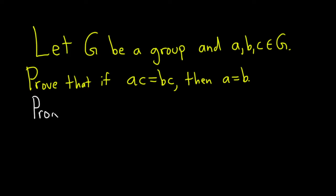Proof. We'll start by assuming that ac is equal to bc. So suppose that ac is equal to bc. And the goal here is to show that a is equal to b.